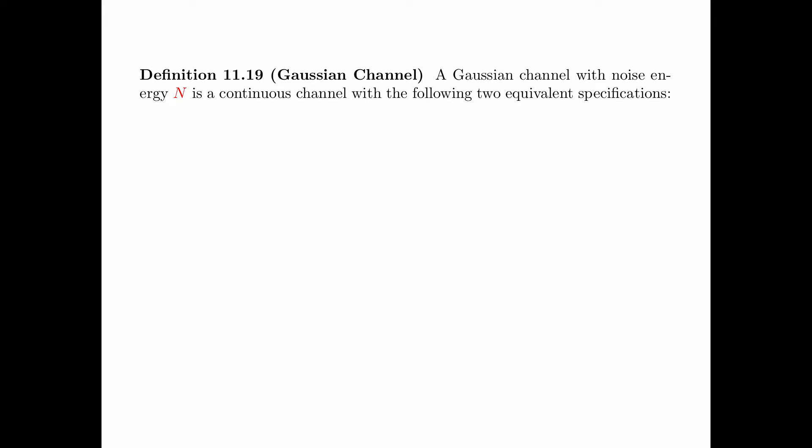We first define the Gaussian channel. A Gaussian channel with noise energy n is a continuous channel with two equivalent specifications. First, it can be specified by the conditional PDF f(y|x), which is a Gaussian distribution with mean x and variance n. And second, it can be specified by the noise random variable z, which is a Gaussian random variable with mean 0 and variance n. The output of the channel is equal to the sum of the input x and the noise random variable z.